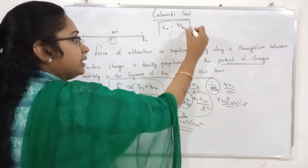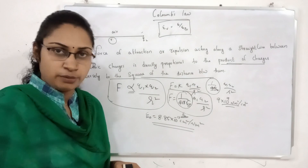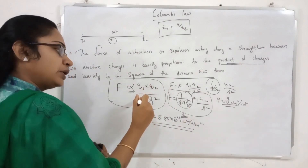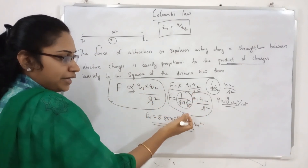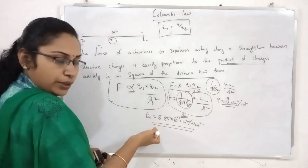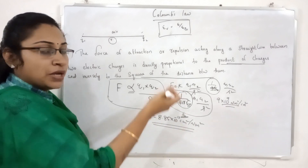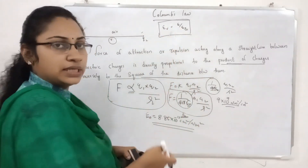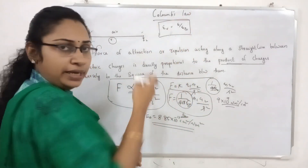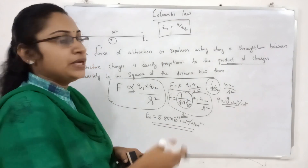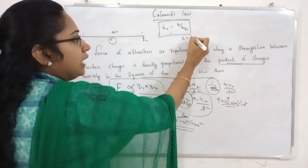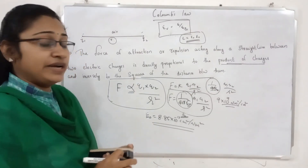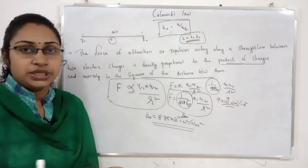There is another medium — permittivity of the medium divided by permittivity of the air. The relative permittivity, epsilon r, is represented as epsilon r equals permittivity of the medium divided by permittivity of the air. The equation is: epsilon is equal to epsilon r into epsilon 0.